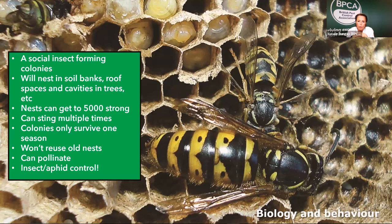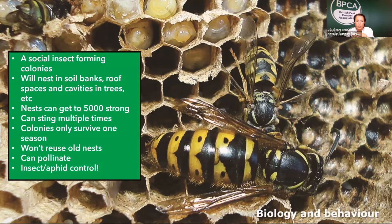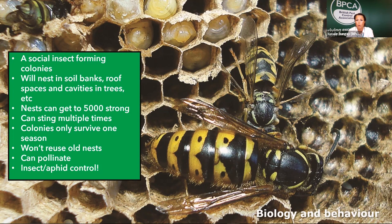Wasps are social insects, similar to and closely related to ants. They live in large colonies within nests and work together. They'll build nests in soils, banks, roof spaces, cavities, trees, and anywhere the queen deems suitable. They can get to about 5,000 workers. Importantly, they can sting multiple times - there was a recent story in our magazine where a pest controller died from just two stings, causing anaphylactic shock. One wasp can sting you multiple times, which is why safety measures are essential.